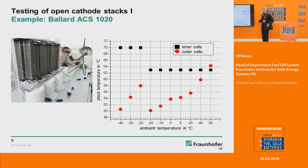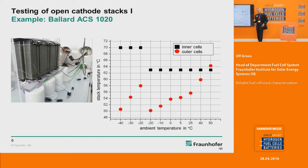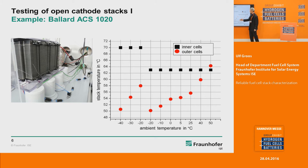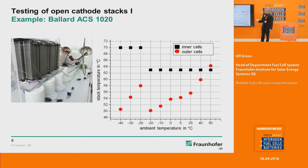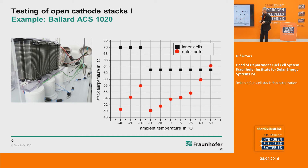Let me show some results using our climate chamber. In this case we worked with the Ballard air-cooled stack 1020, which is very well known especially for backup power applications. What you see here is the temperature of inner cells and outer cells as a function of different ambient temperatures. We did measurements from minus 40 degrees Celsius up to plus 50 degrees Celsius. You see that from time to time there is a huge temperature difference — inner cells are warmer and outer cells are colder — which is very much related to relative humidity, affecting stack operation significantly.